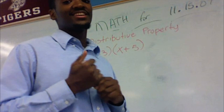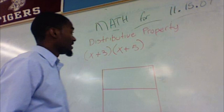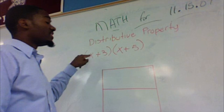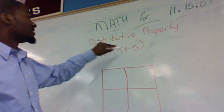The box method says that because you need to multiply this 3 times an x and this 3 times a 5, and this x times an x, and this x times 5, you have a lot of multiplying. Rather than multiplying everything in your head, we draw 4 boxes since we have 4 different terms.